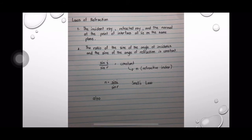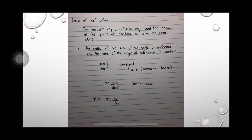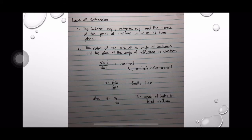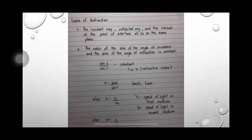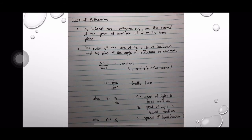n is also equal to v1 divided by v2, where v1 is the speed of light in the first medium, and v2 is the speed of light in the second medium. And n is also equal to C divided by v2, where C is the speed of light in vacuum, which is always equal to 3.0 × 10⁸ metres per second, and v2 is the speed of light in any medium that the light will pass through.